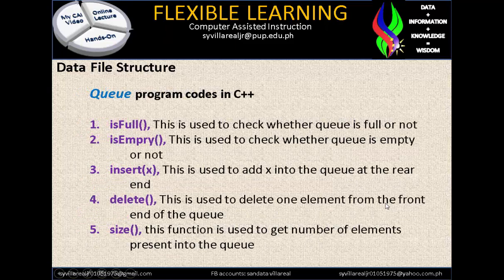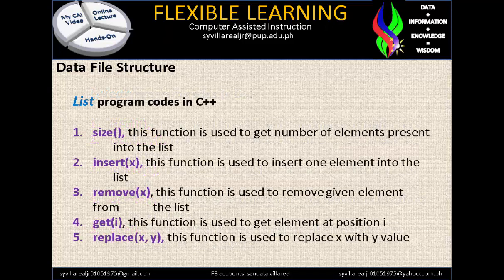In queue program codes in C++, we have the syntax: isFull, isEmpty, insert, delete, and size — they are also the same. Queue data structure and stack data structure are almost the same. In list program codes in C++, we have: size, insert, remove, get(i), and replace(x, y) functions. These are all functions — what are called pre-functions — so that we can identify, create, and insert them into the program we are building to make it more effective and functional.